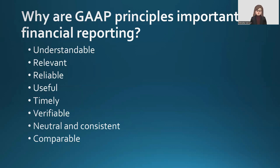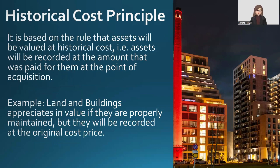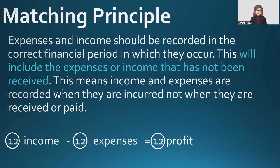So the first GAAP principle is the Historical Cost Principle. This is the one most students understand fully. It states that assets will be valued at historical cost — assets will be recorded at the amount that was paid for them at the point of acquisition. For example, land and buildings do appreciate in value over time if the building is maintained well, but in our financial records the building is shown at historical cost. So if I bought a building 10 years ago at 300,000 and now it's worth 1 million, in my financial statements this building will be valued at 300,000 — at the historical cost, the original cost price.